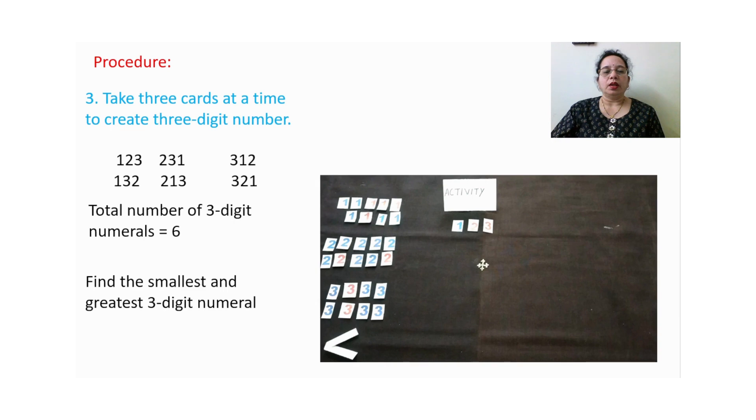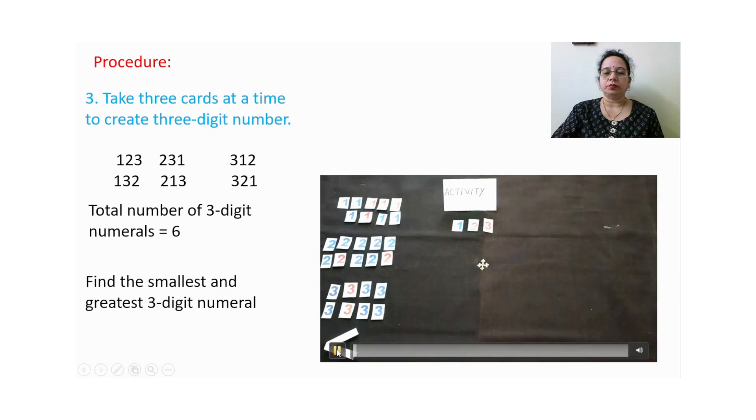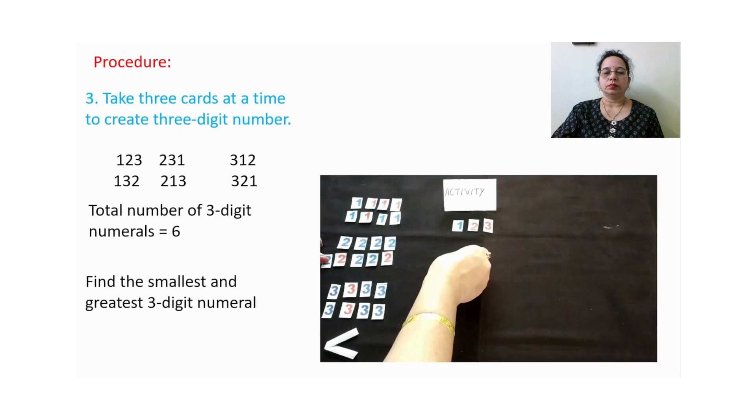Now here we will choose three digits all the three digits and we will try to find out how many numbers are possible with the three digits. This time we have to choose all the three digits 1, 2 and 3. So let me take three digits 1, 2 and 3 and now we will find out with these three digits how many numbers are possible.